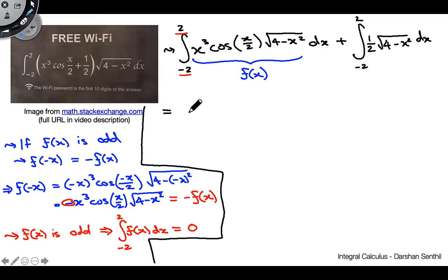So what this is going to come out to is we're going to have all of this is just going to be 0, but we still do have this other integral here. So we have the integral from negative 2 to 2 of, we can actually bring this 1 half out front. 1 half times the integral of square root of 4 minus x squared dx.